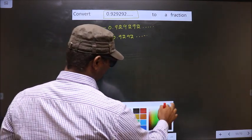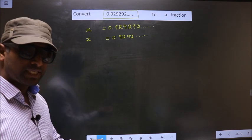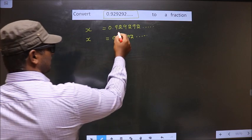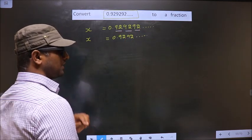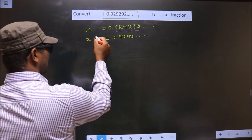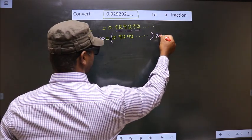Now you should check how many numbers are being repeated. Here, 929292. Two numbers are being repeated. Whenever two numbers are being repeated, you should multiply by 100 on both sides.